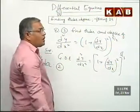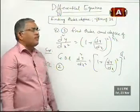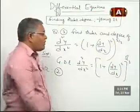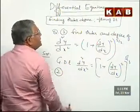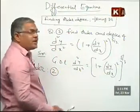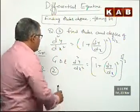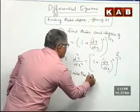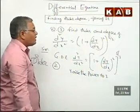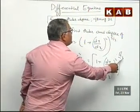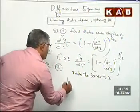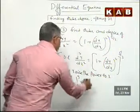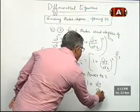Now come to the degree. To find the degree, a polynomial-wise expression is compulsory. The presence of the fractional power 5/3 is obstructing the polynomial form of the derivatives. So we raise both sides to the power 3. This removes the fractional power, giving: (d²y/dx²)³ = (1 + (dy/dx)²)^5.